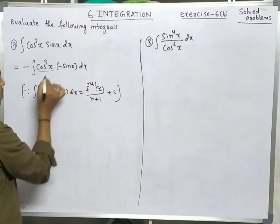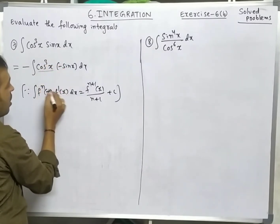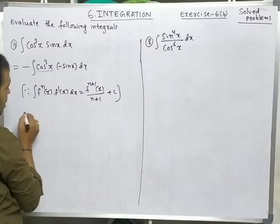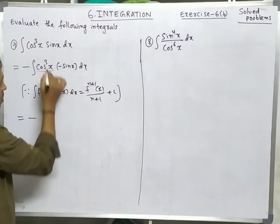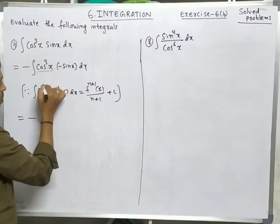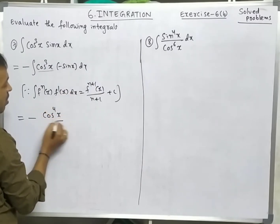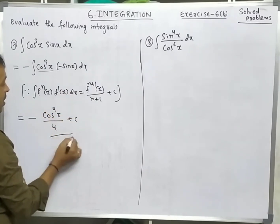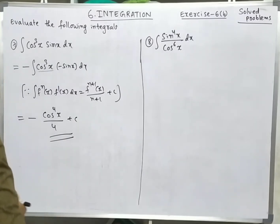Here f(x) = cos x, n = 3, and f'(x) = -sin x. So we apply the formula: increase the power by 1, giving cos⁴x/4 + c. The answer is -cos⁴x/4 + c.